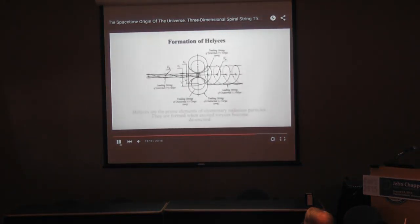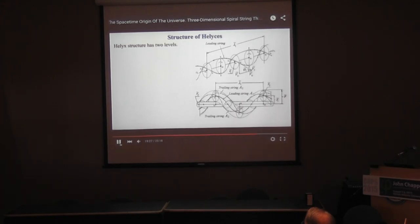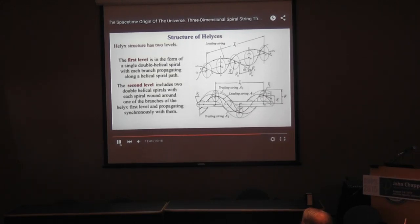Helices are the prime elements of elementary radiation particles. They are formed when excited Tauruses become de-excited. The helix structure has two levels: the first level is a single double helical spiral with each branch propagating along the helical spiral path, and the second level includes two double helical spirals, each wound around one of the branches of the first-level helix and propagating synchronously with them.